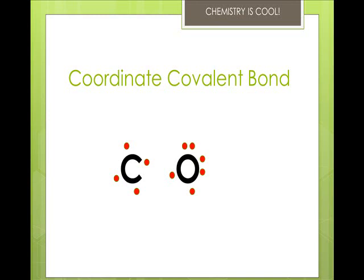When one atom donates both electrons in a covalent bond, it's a coordinate covalent bond. An example is carbon monoxide. Coordinate covalent bonds often happen with polyatomic ions or when an element has the wrong number of bonds.